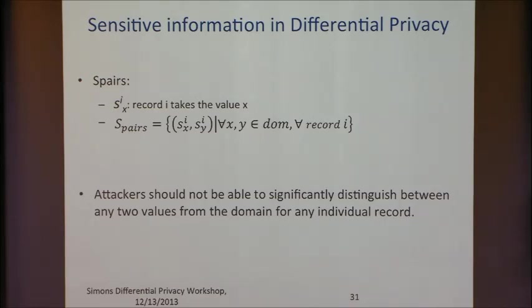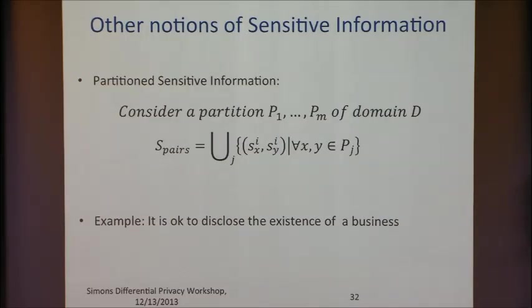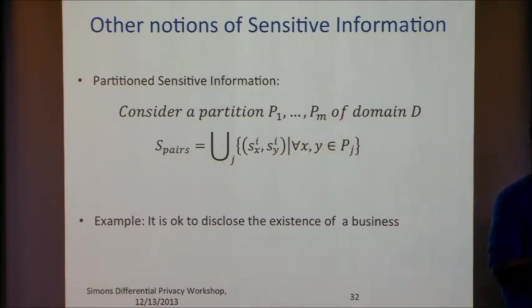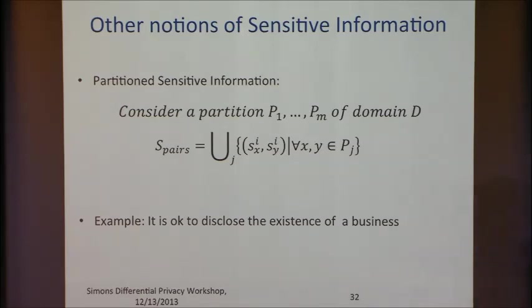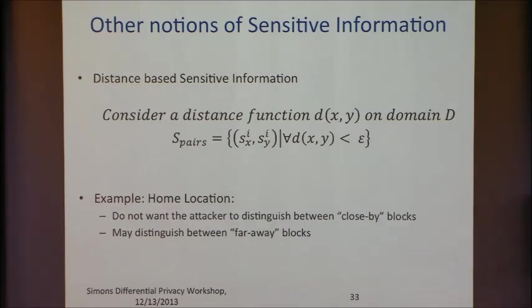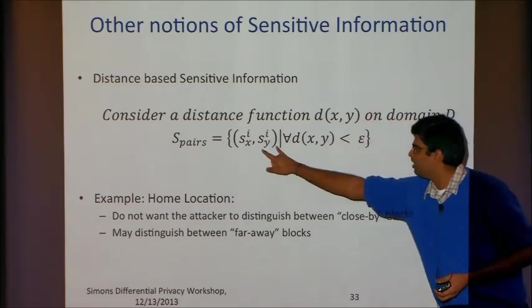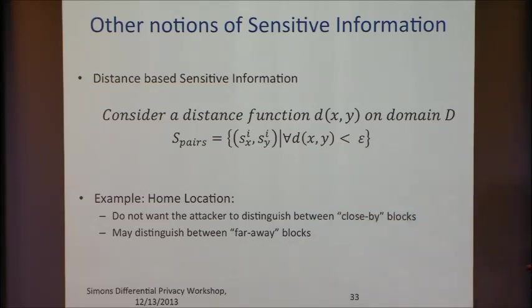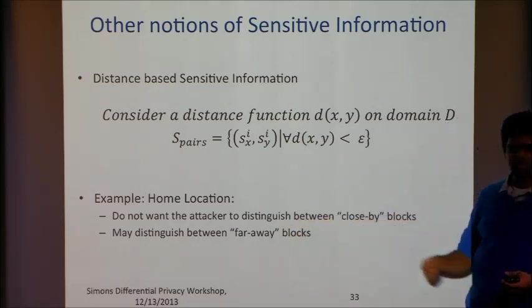In reality, you may not need protection for all such pairs — you may be OK with just a subset being protected. For instance, you can partition your domain into P_1 through P_M and only protect pairs X and Y within each partition, while it's OK to disclose whether X and Y are in different partitions. An example: if it's OK to disclose the existence of a business, you don't need a secret pair covering employment zero versus employment greater than zero — all your pairs are within positive employment values. Or you can have distance-based sensitive information, where you only care about pairs X and Y that are close according to some distance metric.